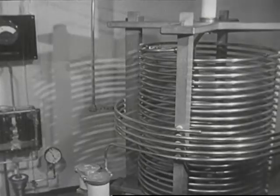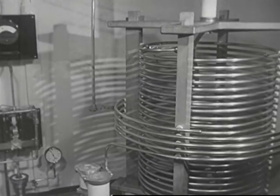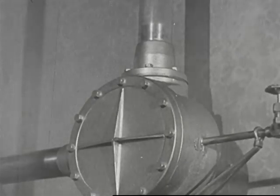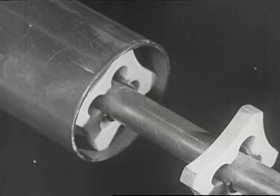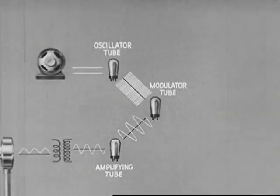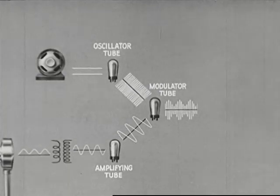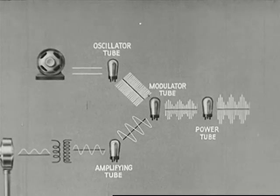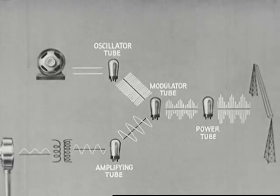The current from the power tubes goes to this antenna coupling unit, which is essentially a transformer. The current is carried by two insulated copper tubes, one within the other, to the antenna. To review the events, the modulated radio frequency current coming from the modulator goes to the power tubes. The power tubes amplify this current, which then goes to the antenna.